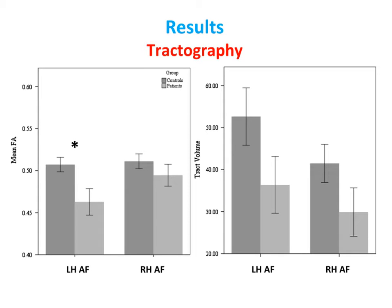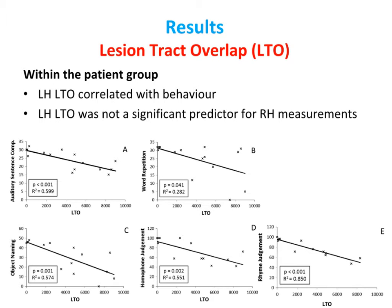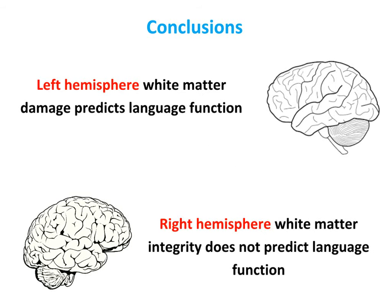Looking at the difference between patients and controls with regard to the left and right arcuate fasciculus, we found that there were no differences in the right hemisphere. However, in the left hemisphere, controls had higher mean FA of the arcuate fasciculus. Lastly, we looked at lesion-tract overlap, which is a measure of the level of direct damage to the arcuate fasciculus as a result of the stroke. We saw that lesion-tract overlap correlated with performance on all the language measurements, as you can see below; however, it was not a significant predictor of right hemisphere white matter integrity.